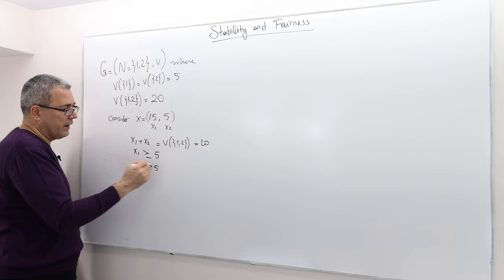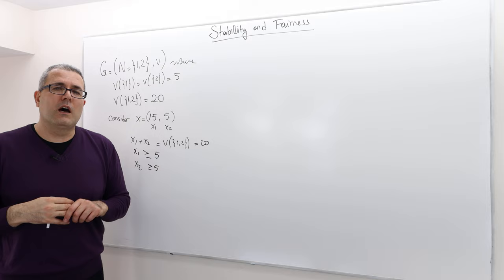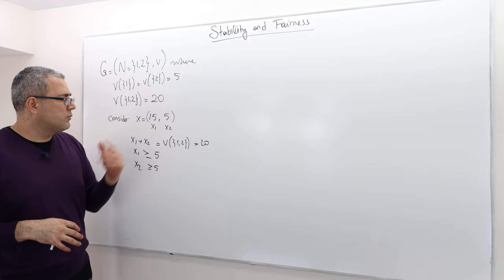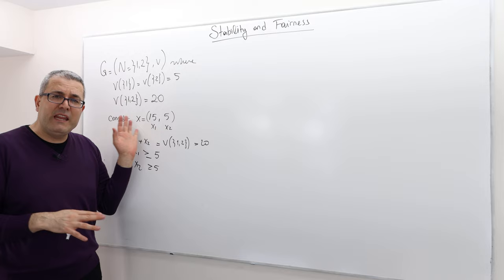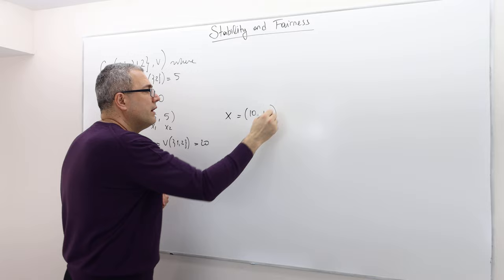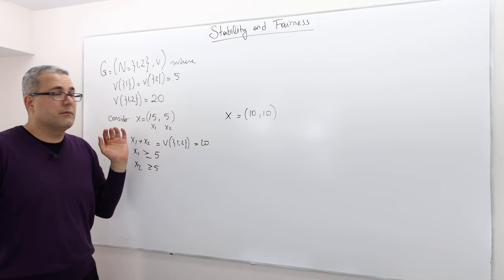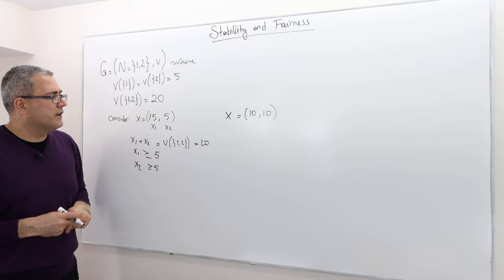So basically, all three requirements of the definition of stability holds. And so, therefore, this x1 and x2 is in the core. It's stable. Well, there are many other stable outcomes. For example, x equals 10, 10. That is also stable. And it clearly sounds more fair than this one, right? So the question is, how do we formally define fairness?